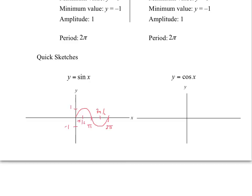For cosine, you have the same thing except you start at the maximum. You start at the maximum and finish at the maximum, so this value is 1. Your minimum value would be negative 1. The x-values are pi over 2, pi, 3 pi over 2, and 2 pi. This is the quick sketch of cosine between 0 and 2 pi, and the other was the quick sketch of sine between 0 and 2 pi.